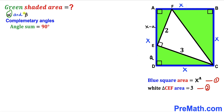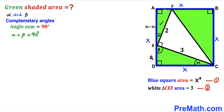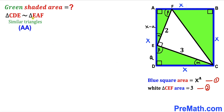Let's assume alpha and beta are two complementary angles, meaning alpha plus beta equals 90 degrees. Labeling the angles: one corner is alpha, the adjacent corner is 90 degrees, so the next angle must be beta. Since the full angle at that vertex is a straight angle and one part is 90 degrees, the remaining angle is alpha. In the next triangle, with a 90-degree angle and alpha, the third angle must be beta.